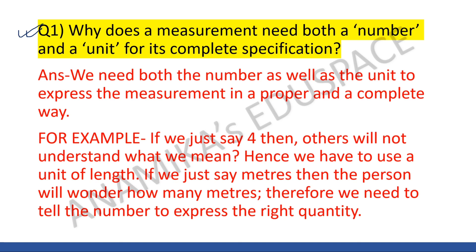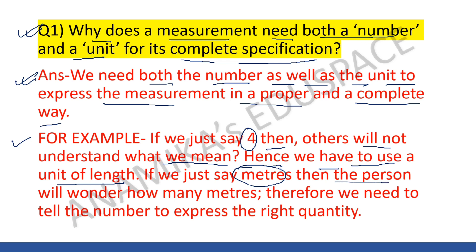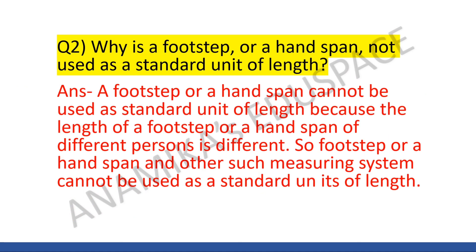Long answer question number one: why does a measurement need both a number and a unit for its complete specification? We need both the number as well as the unit to express a measurement in a proper and complete way. For example, if we say 'four,' others will not understand what we mean. And if we say 'meters,' the other person will wonder how many meters. Therefore, we need to state the number to express the right quantity.